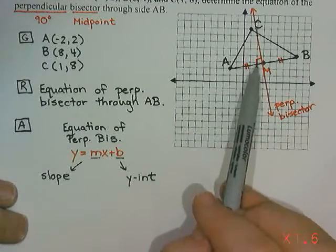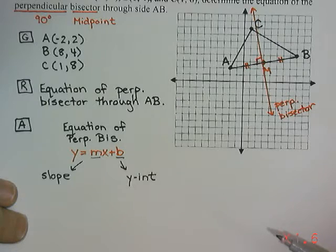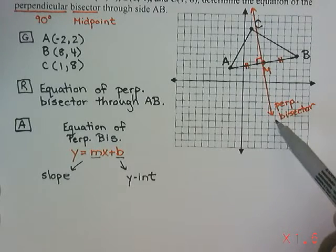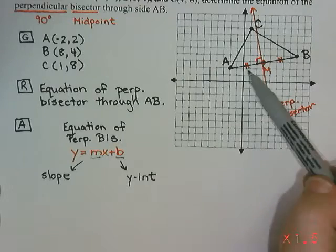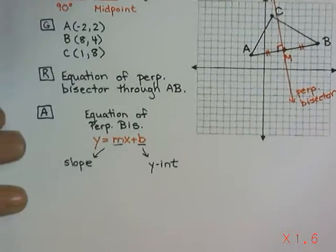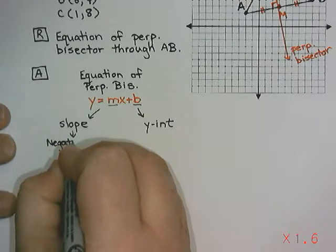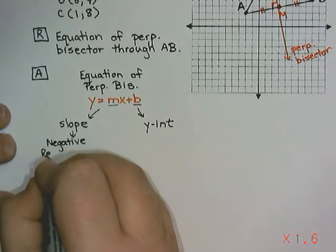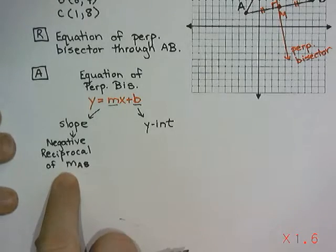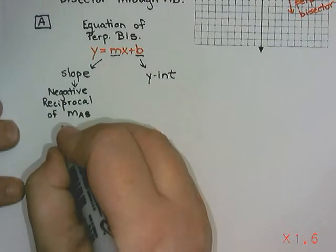There has to be another way, and the secret is the perpendicular part. When two lines — the perpendicular bisector and AB — meet at a 90 degree angle, that means their slopes are negative reciprocals. So because it's perpendicular, we can't calculate the slope directly, but we can find the slope of AB and then use the negative reciprocal to find the slope of the perpendicular bisector. So for our slope, we're going to do the negative reciprocal of the slope of AB.